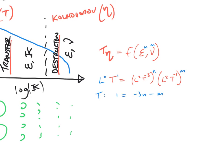So for the time, the power 1 is equal to minus 3n minus m. And similarly for the length, the power 0 is equal to 2n plus 2m. And solving simultaneously, we find that n is equal to minus 1 half, and m is equal to 1 half. So that the Komogorov timescale is equal to mu over epsilon, all to the power 1 half.